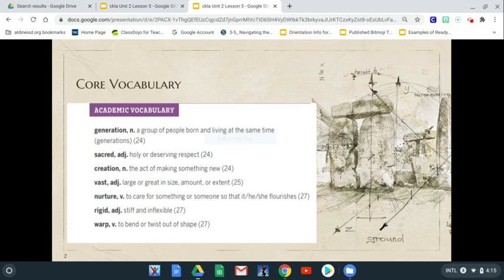The second vocabulary word is sacred. It's an adjective and it means holy or deserving of respect. Some places had temples and the temples, because they had religious practices, were sacred ground. So it was very respectful and holy as you walked upon the temples.